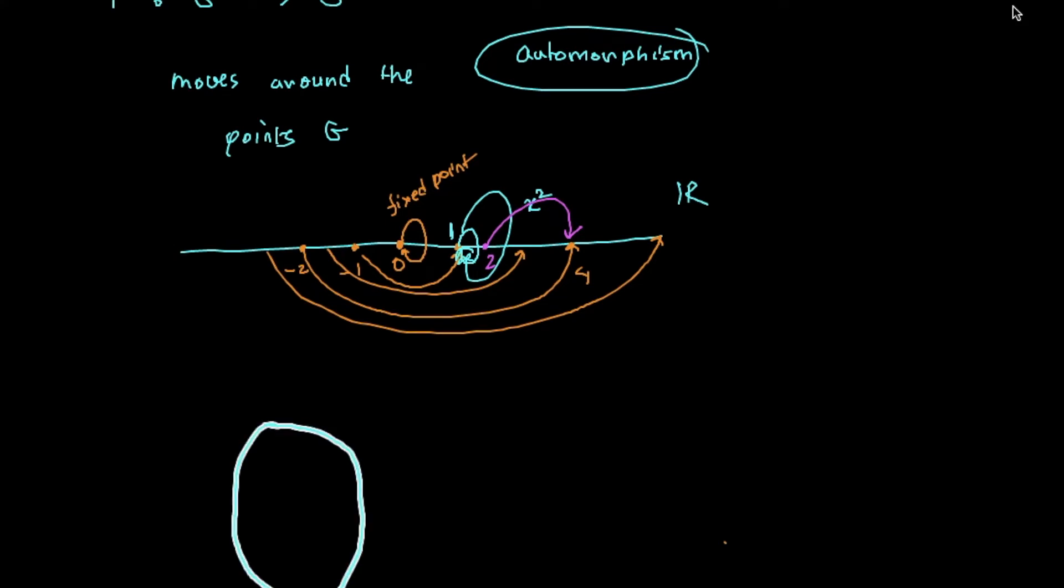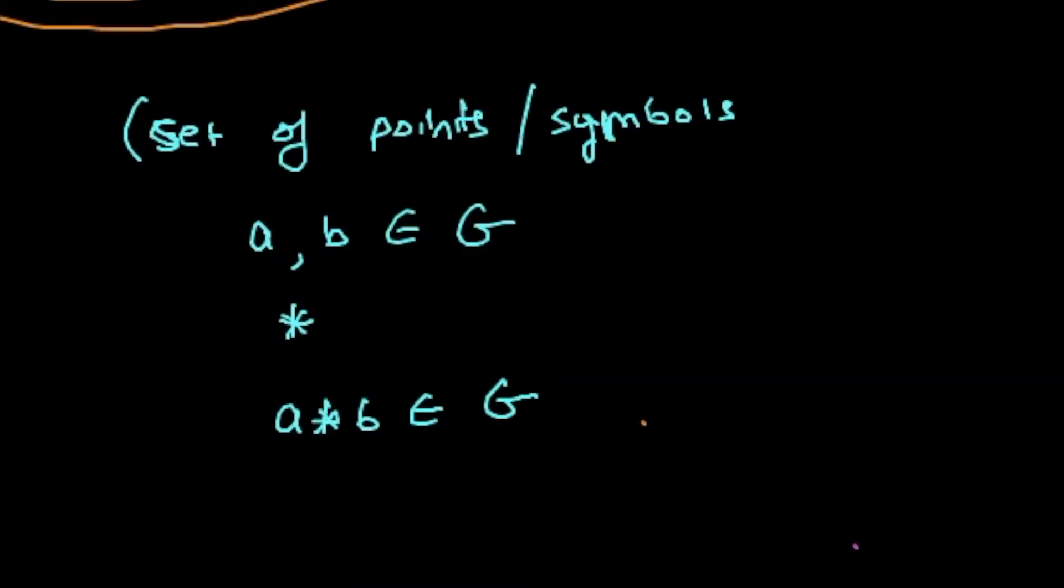Let's draw a picture. We have a group G like this. You probably understand that the group G is a set of points or symbols with a couple of properties. For example, there is a way to combine elements in the group. If a and b are elements of G, then there is an operation usually denoted by star, such that a star b is also in G. And for each a, we have an a inverse, such that a times a inverse equals a inverse times a equals the identity element.